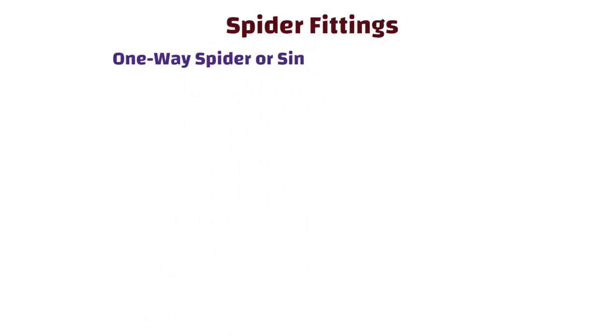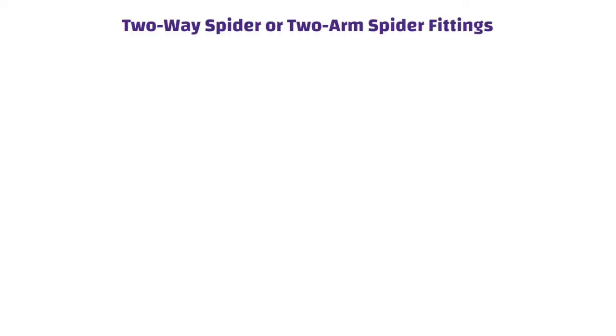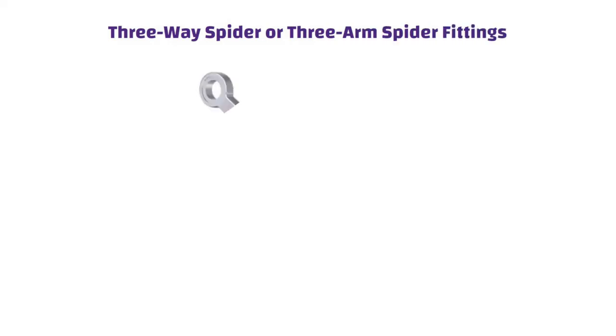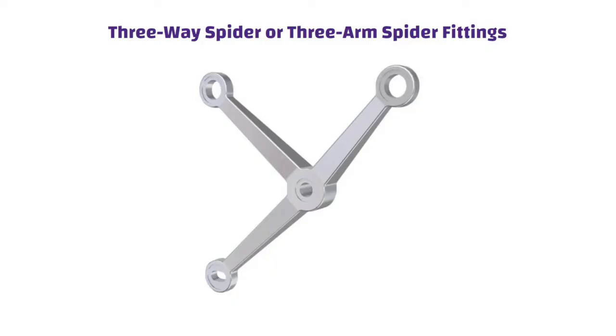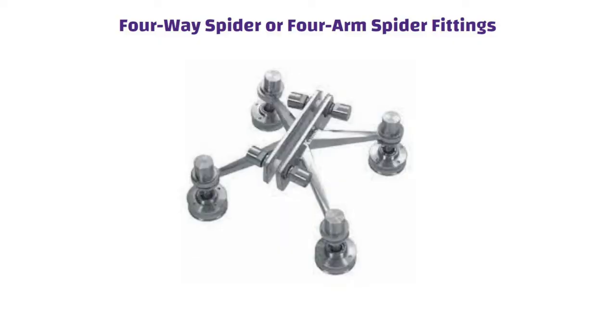There are several types of spider fittings. One-way spider or single arm spider fittings: it has only one arm extending from a central point. Two-way spider or two arm spider fittings: it has two arms extending from a central point in opposite directions. Three-way spider or three arm spider fittings: it has three arms extending from a central point. Four-way spider or four arm spider fittings: it has four arms extending from a central point at 90 degree angles to each other.